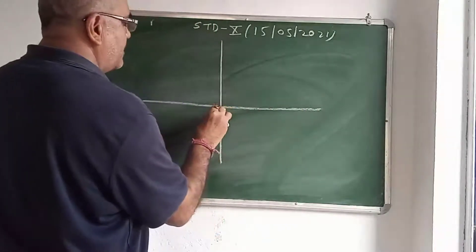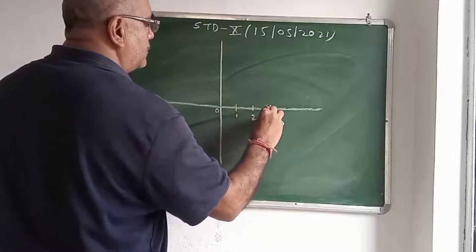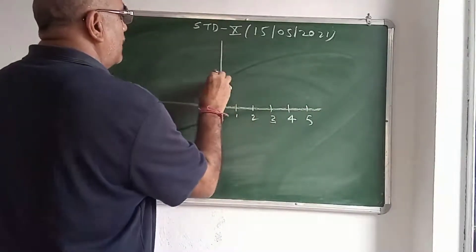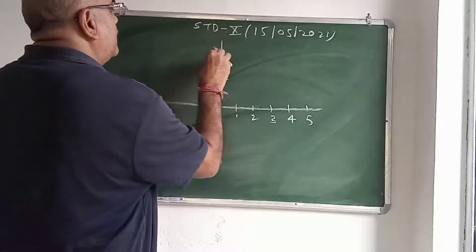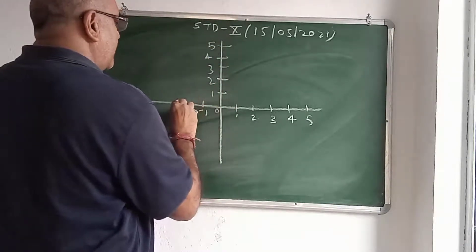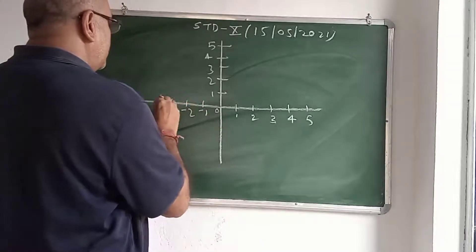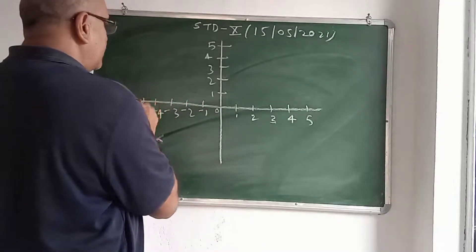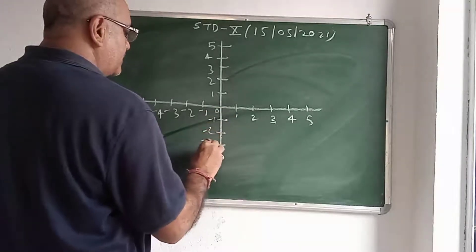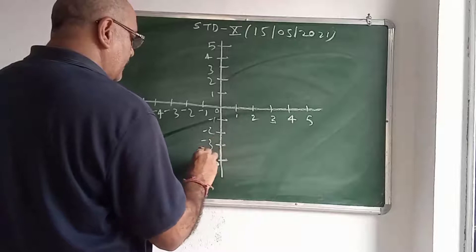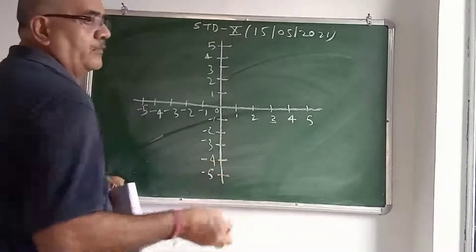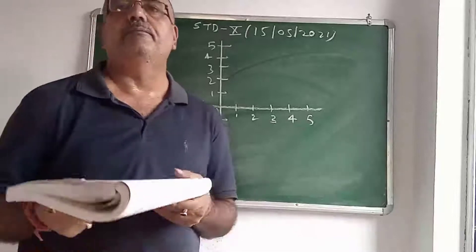This is origin. 1, 2, 3, 4, 5. 1, 2, 3, 4, 5. Minus 1, minus 2, minus 3, minus 4, minus 5. Minus 1, minus 2, minus 3, minus 4, minus 5.